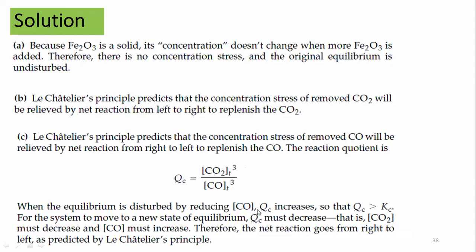When the equilibrium is disturbed by reducing the carbon monoxide concentration, the denominator decreases so Qc increases. Qc is now greater than Kc. When Qc is greater than Kc, the system moves towards a new equilibrium and Qc must decrease — meaning CO₂ must decrease and CO must increase. Therefore, the net reaction goes from right to left, as predicted by Le Chatelier's principle.